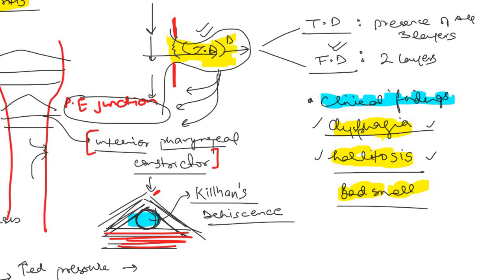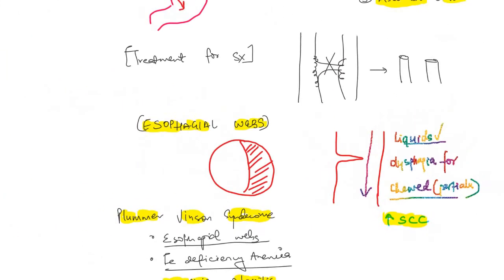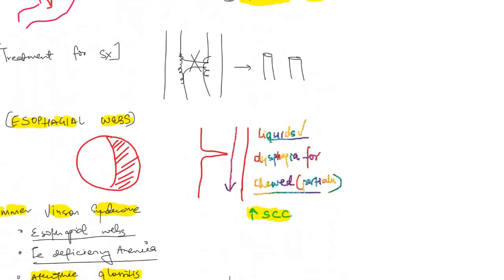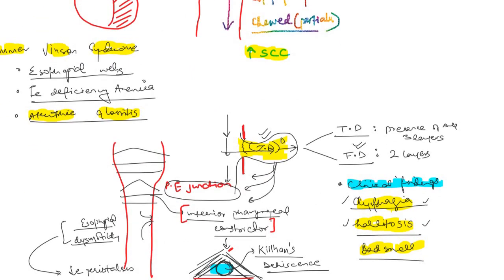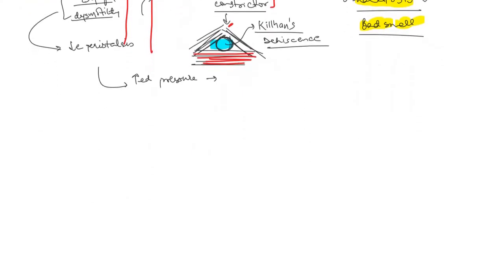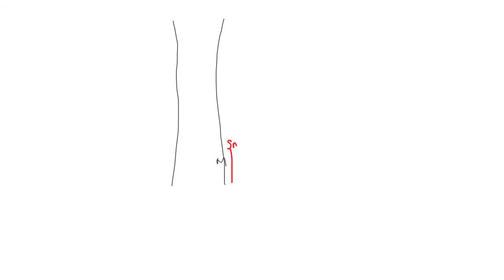Now let's compare Mallory-Weiss syndrome and Boerhaave syndrome. The esophageal wall has layers from inside out: mucosa, submucosa, muscularis propria, and serosa. In Mallory-Weiss syndrome, increased intraluminal pressure — such as from intense vomiting — causes a longitudinal tear of the mucosa and submucosa, but the muscularis propria is not involved.